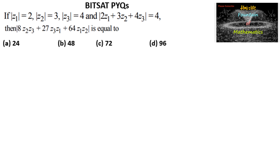Here we have three complex numbers z1, z2, and z3 whose |z1| = 2, |z2| = 3, |z3| = 4, and |2z1 + 3z2 + 4z3| = 4. Then the value of |8z2z3 + 27z3z1 + 64z1z2| is equal to? Let's consider the expression 8z2z3 + 27z3z1 + 64z1z2.